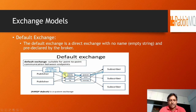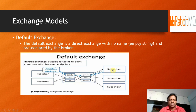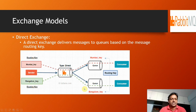The AMQP default exchange is created, and through that we have given a key called 'general'. When this queue is accessed by a subscriber, the subscriber will use the key name pointing to the default exchange and consume those messages for the next process. We also call it a system exchange.